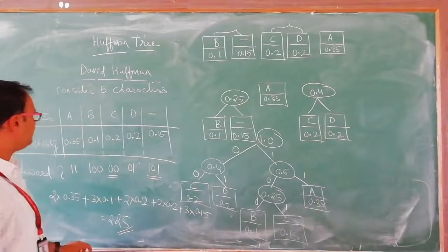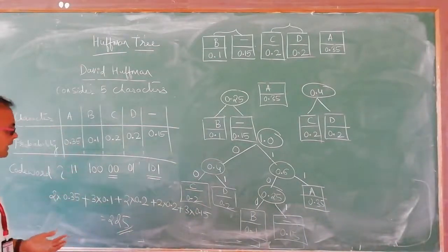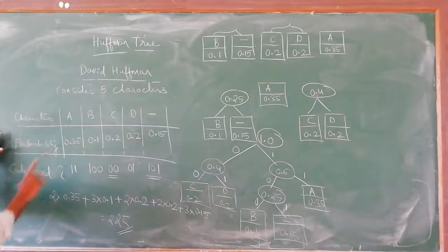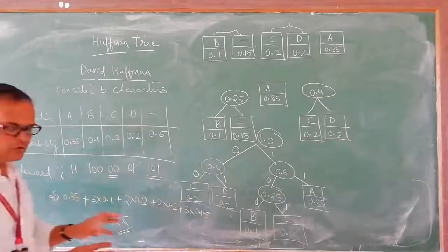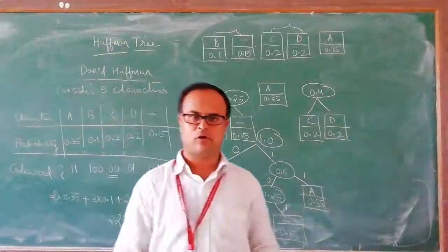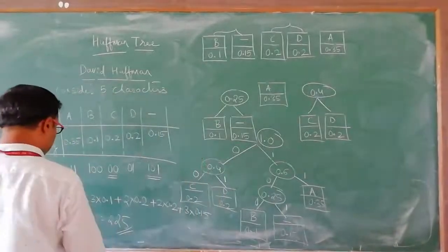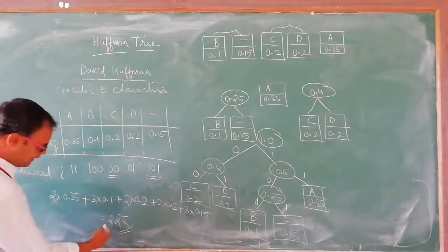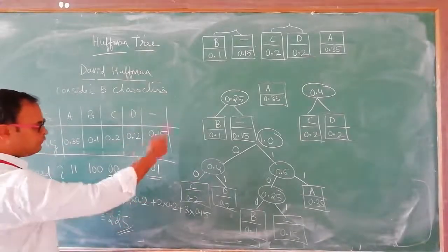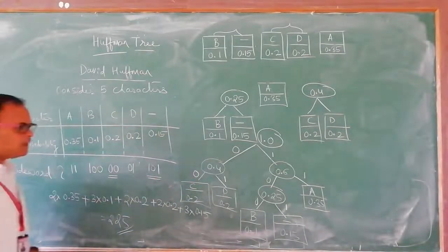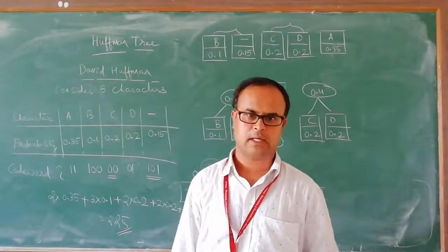So in an exam, they may ask you to define what is a Huffman Tree, give you characters with their probabilities, and ask you to find the code word for each. Then they may ask what is the code word for words like cat, car, school, or college. Otherwise they may ask you to find the average bit length used for this Huffman Tree. Thank you.